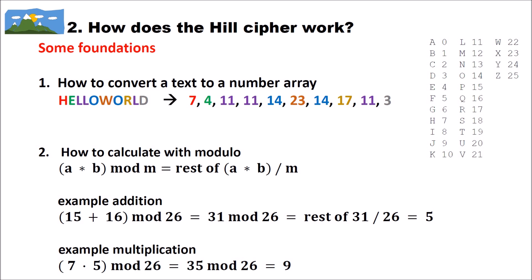So how does the Hill cipher actually work? Before we look at the cipher itself, we need some foundations. First, we need to know how to convert a text to a number array. Let's assume our plain text is 'hello world'. We want to change this to a number array since the Hill cipher works on linear algebra. There's a table with a mapping: A maps to 0, B maps to 1, C to 2, and so on, with Z mapping to 25.